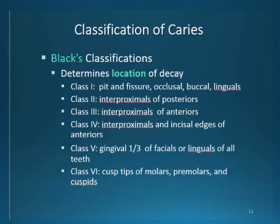Black's classification is determined by location. Some of these locations are not visible in radiographs, therefore they are not commonly used. Class 1 are pits and fissures, occlusal surfaces, buccal and lingual surfaces — due to the two-dimensional image of a radiograph, these areas are not visible. Class 2 and 3 are interproximal decays defined by either posterior or anterior location. Class 4 is the involvement of more than one surface. A lesion that has invaded the incisal edge and the interproximal surface of an anterior tooth may be classified here. Class 5 refers to cervical areas of the teeth, and class 6 involves the coronal part of the teeth. These classifications are best used in dental charting, more so than radiographic interpretation.